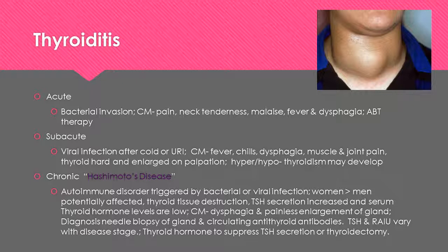Chronic thyroiditis is also referred to as Hashimoto's disease. It is an autoimmune disorder triggered by bacterial or viral infections, and women are more likely than men to be affected. There is thyroid tissue destruction; TSH secretion is increased and serum thyroid hormone levels are low. Clinical manifestations are dysphagia and painless enlargement of the gland. Diagnosis can be done through a needle biopsy and circulating antithyroid antibodies. TSH and RAIU will determine the disease stage, and treatment includes thyroid hormone to suppress TSH secretion, or the patient may potentially need a thyroidectomy.